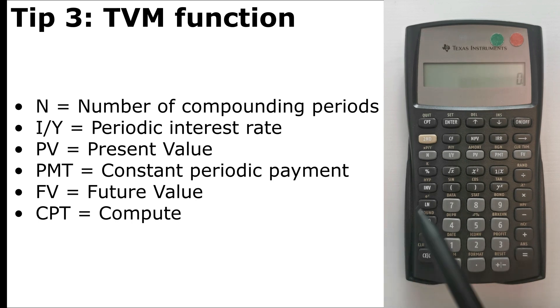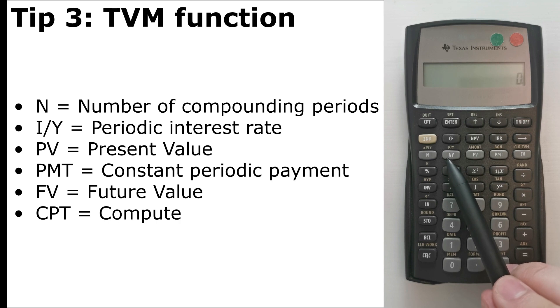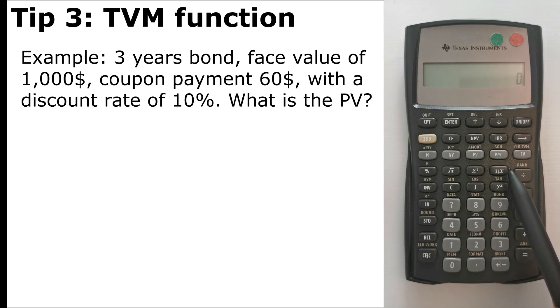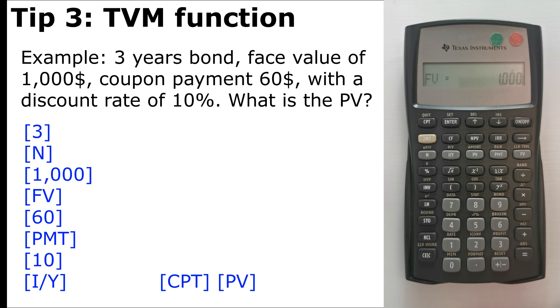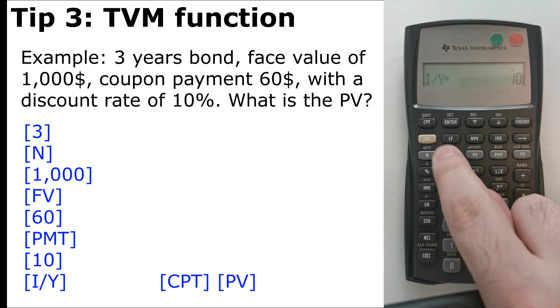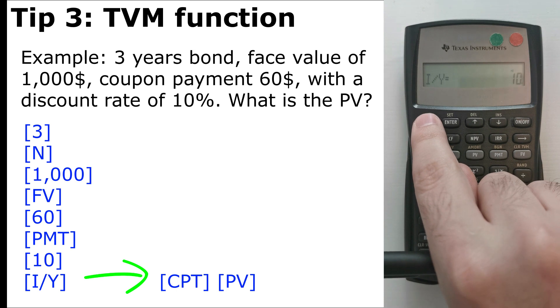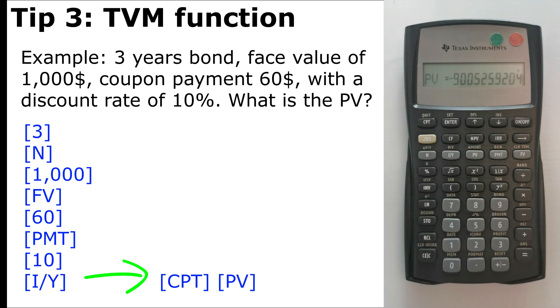So for the time value of money function, we have first N as the number of periods, IY as interest rates, PV as present value, PMT as payment, and FV as future value. Let's take this quick example for a bond to check out how to input the numbers here. So we have a three-year bond with a face value of $1,000, coupon $60, the discount rate of 10%. What's the present value? So let's fill it out. First we press 3, then N, so it's three years. Then we have $1,000 as face value, so $1,000, future value. Coupon payment $60, so $60 payment, and we have a discount rate of 10%. We input 10% as 10, not as 0.1. So we put 10 interest rates, and we compute the present value, and we get minus 900 as the present value.